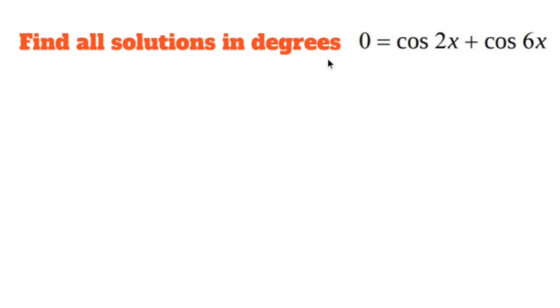Find all the solutions in degrees if 0 equals cos 2x plus cos 6x. Now, before we tarry any further, you can't just add these guys. It's not like you can be like, well, let's combine them cos 8x. No, you can't combine cosines that have different insides.